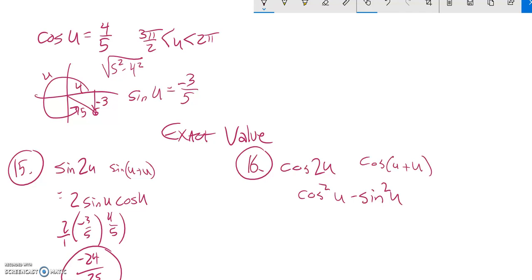Cosine of U is 4 fifths, so this would be 4 fifths squared minus sine is negative 3 fifths squared. So just do a little arithmetic here. Square this: 4 squared and 5 squared, that's 16 25ths minus negative 3 squared is 9, positive 9. 5 squared is 25. 16 minus 9 is 7. So that would be 7/25.